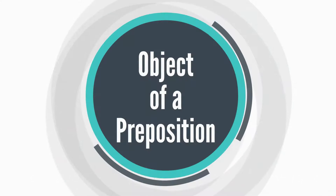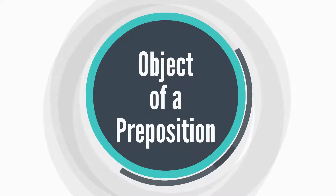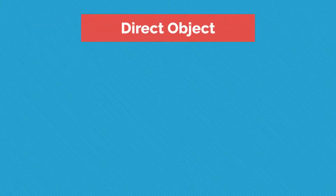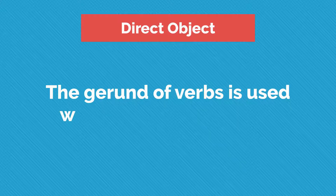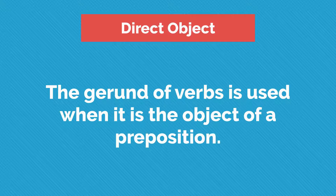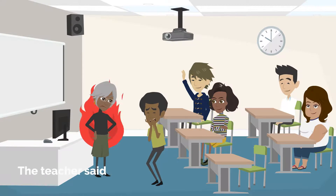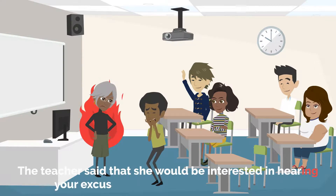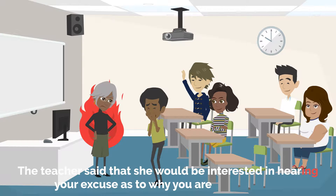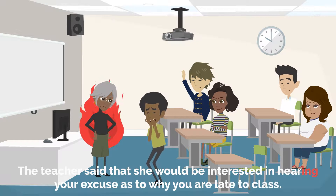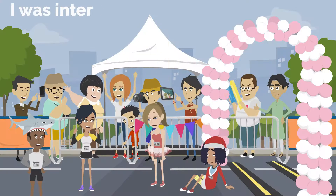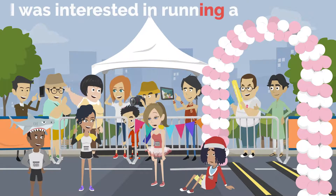Object of a preposition. The gerund of verbs is used when it is the object of a preposition. For example: The teacher said that she would be interested in hearing your excuse as to why you are late to class. I was interested in running a marathon.